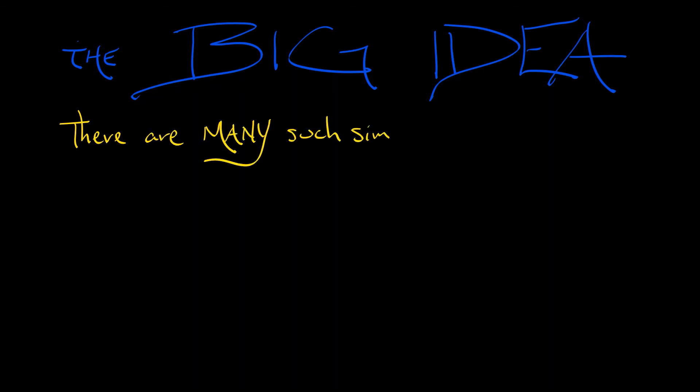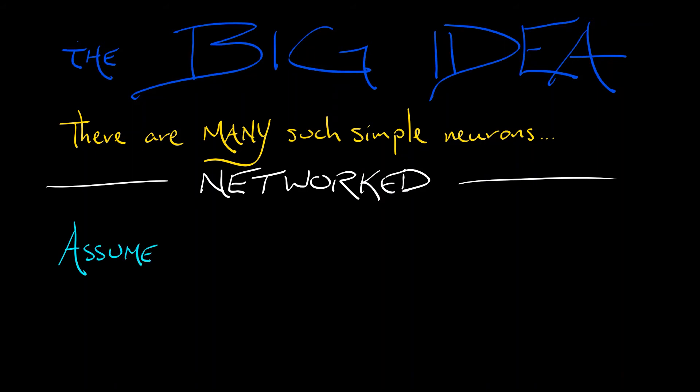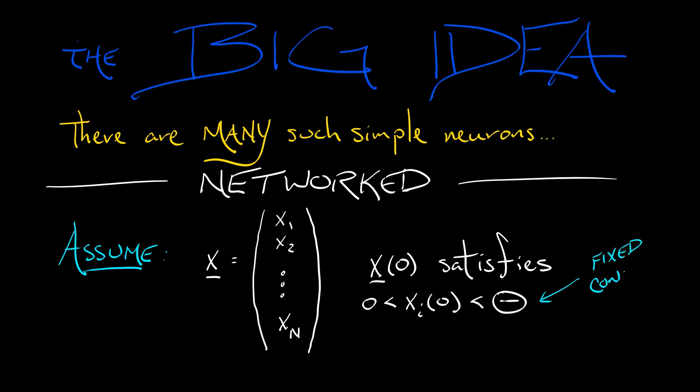And here's what we're going to do. The big idea is that we have many such simple neurons and they are all wired together. They are networked just like neurons are. So let's assume that our vector x is a vector of activity levels for n neurons. We have x1, x2, all the way up through xn. Now, if this initial condition satisfies the inequality that these xi's are positive but below that constant theta, then what we want to know is how do we network these together? How do we model the influence that one neuron has on its neighbors?